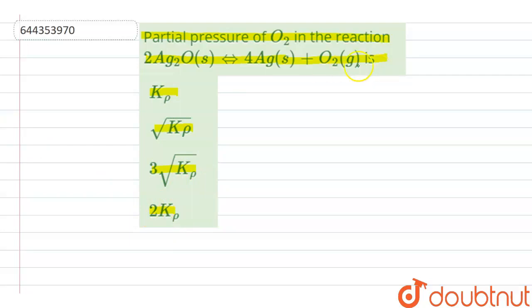So we have to tell for this reaction, partial pressure of oxygen equals which of the following options. For the reaction 2Ag2O gives 4Ag plus O2, Ag is in solid state, this is in solid state, and this is in gaseous state.